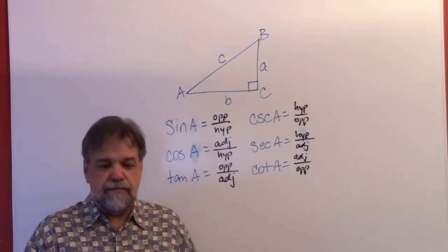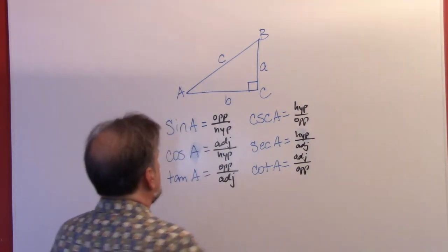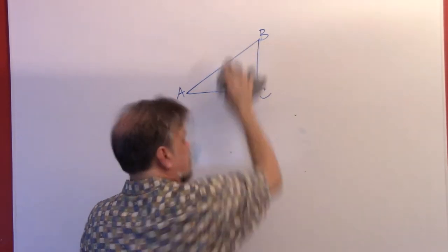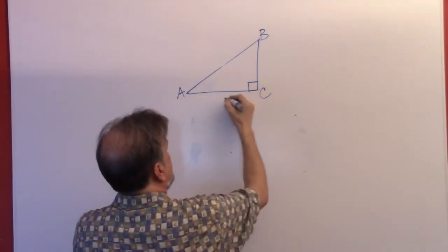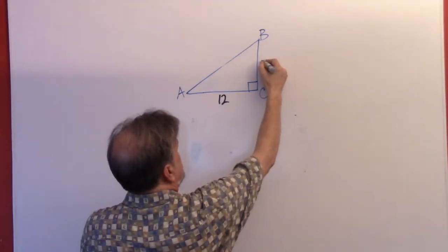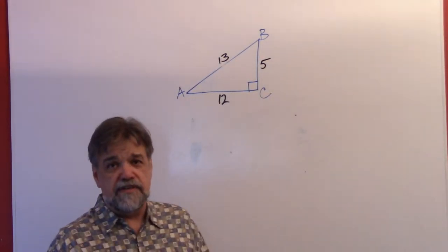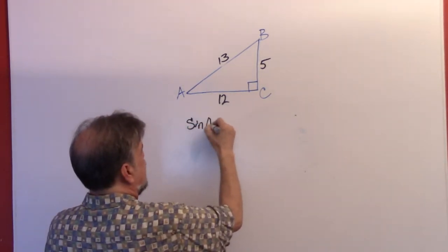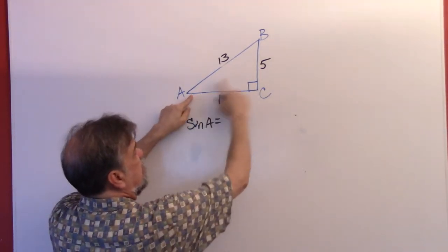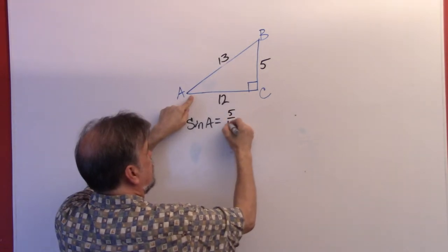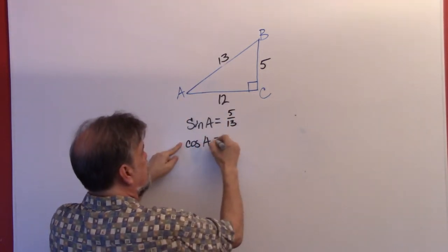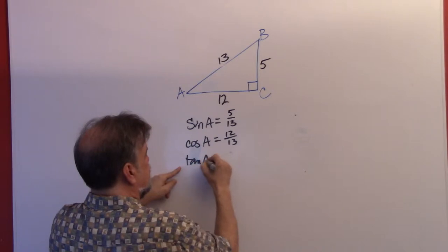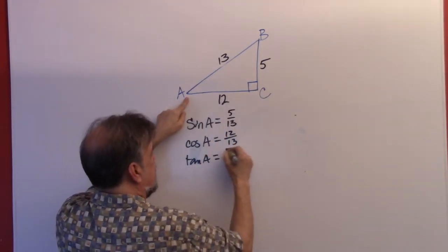Let's look at a sample triangle. Let's use the triangle that has this side as 12, this side as 5, and this side as 13. My triangle is not drawn to scale, so sorry. The sine of angle A — here's A — opposite over hypotenuse is 5 over 13. The cosine of angle A is adjacent over hypotenuse, that's 12 over 13. The tangent of angle A is opposite over adjacent, so that's 5 over 12.